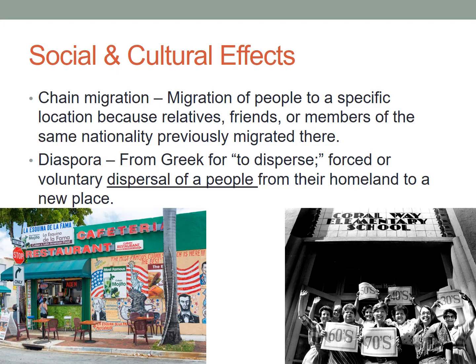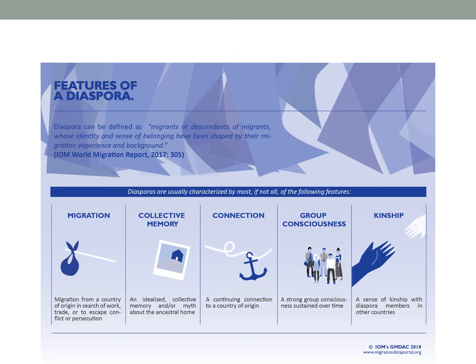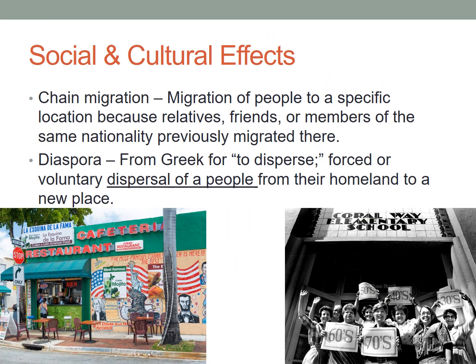While the definition includes both forced and voluntary migrations, most diasporas are forced. Examples include the Jewish diaspora from Palestine by the Roman Empire, the Cuban diaspora following the 1959 Communist Revolution, the Hmong diaspora from Vietnam after the US-Vietnam War, and more recently, the Sudanese diaspora from the Sudanese Civil War. Let's talk about the Cuban diaspora more closely, including its social and cultural effects. Through chain migration and distance decay, the Cuban diaspora was largely pulled to Miami, Florida.